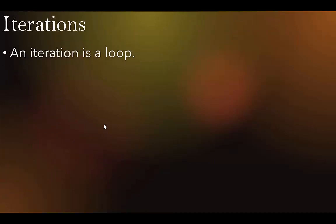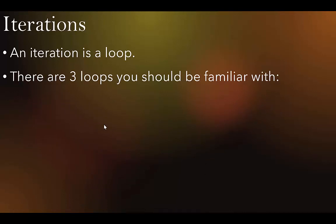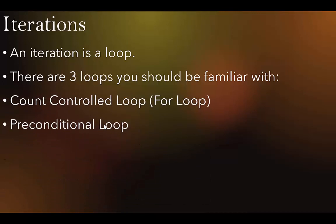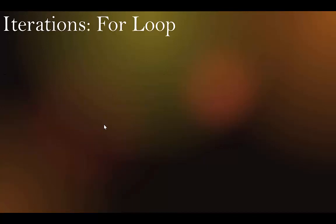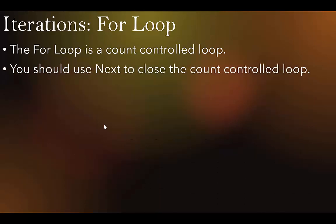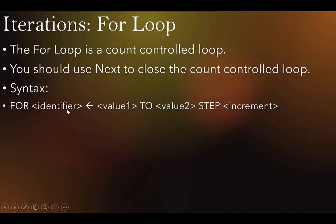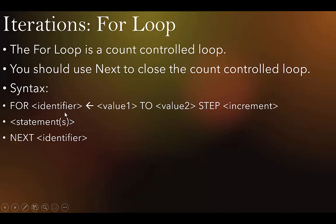Now, iterations — an iteration is a loop. There are three loops to be familiar with: the count-controlled FOR loop, a pre-conditional loop, and a post-conditional loop. The FOR loop syntax is: FOR identifier ← start TO end STEP increment, your code, then NEXT identifier. The STEP increment is optional — if omitted, it defaults to incrementing by one. If you need to increment by a different amount, you must use the keyword STEP in all caps.